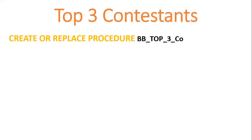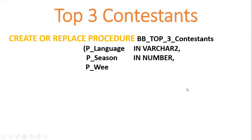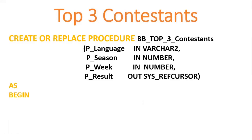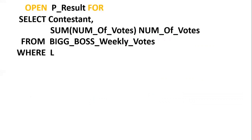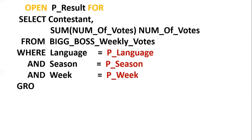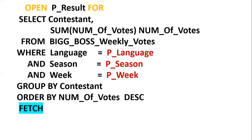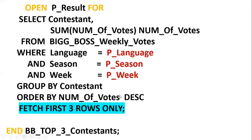The third requirement is to display the top three contestants based on votes. I created a procedure BB_top_three_contestants with three input parameters — language, season, week — and one output parameter as a SysRef cursor. Inside, using the aggregate function SUM of number_of_votes and GROUP BY contestant, ORDER BY number_of_votes DESC, and the 2LC feature 'FETCH FIRST 3 ROWS ONLY', we can achieve this requirement. A complete video on the 2LC feature is available in the description link.